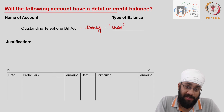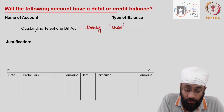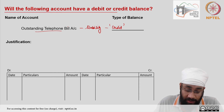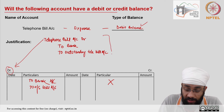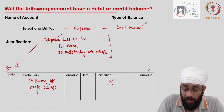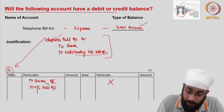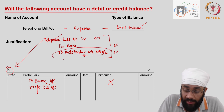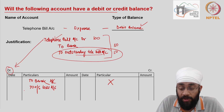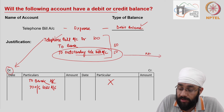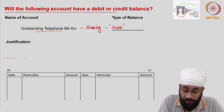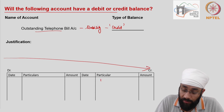When do you record a transaction in the outstanding telephone bill? The journal entry is: telephone bill account debit to outstanding telephone bill account. Let's say 50 was paid and 50 was unpaid. The outstanding telephone expenses account is being credited, so we post it on the credit side and write: by telephone expenses — the amount you did not pay.